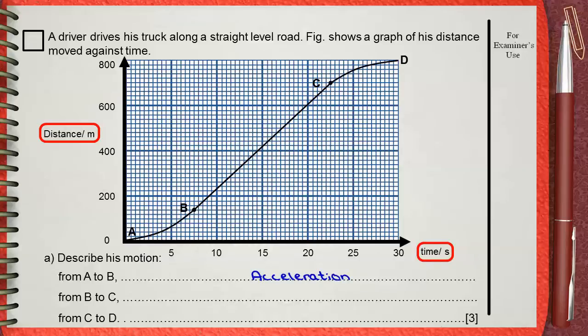From B to C, this straight line shows constant speed. From C to D, this means deceleration.